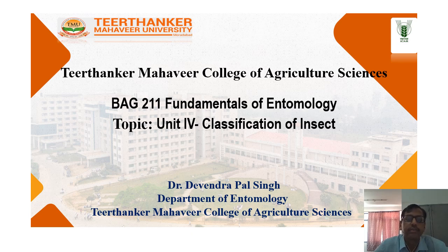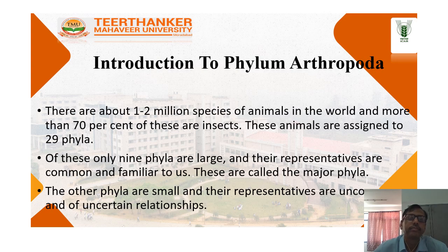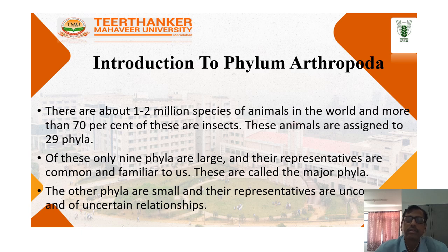Myself, Dr. Vivian Palsing. We are going to discuss about the classification of insects. First of all, we will like to discuss about the Palmatopoda. There are about 1 to 2 million species of animals in the world, and more than 70% of these are insects.